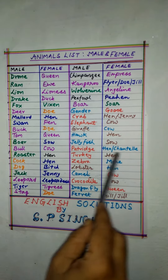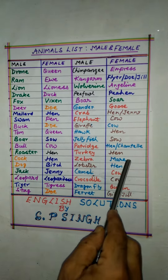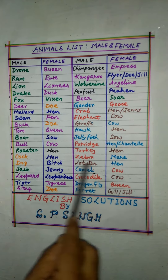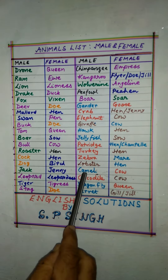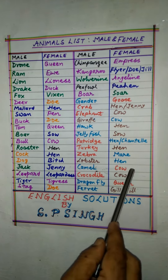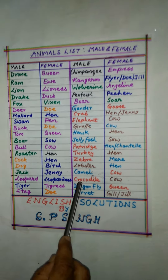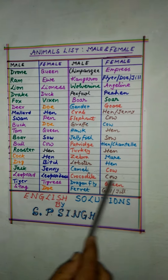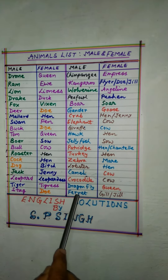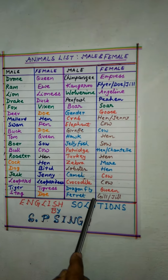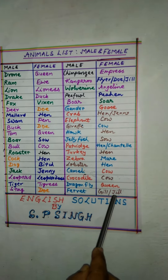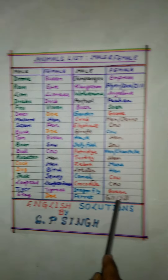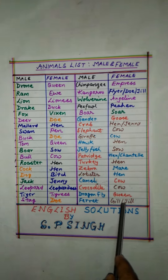Turkey — hen. Zebra — mare. Lobster — hen. Camel — cow. Crocodile — cow. Dragonfly — queen. Ferret — jill. So these two are options here.